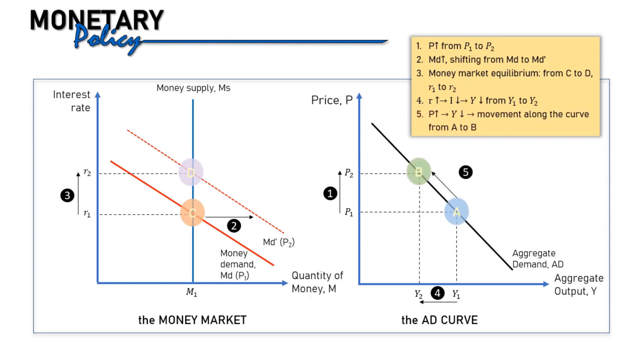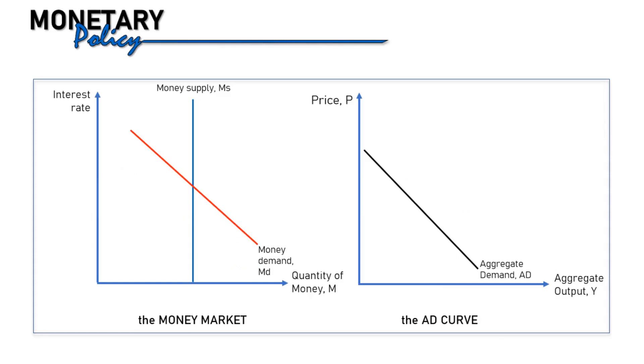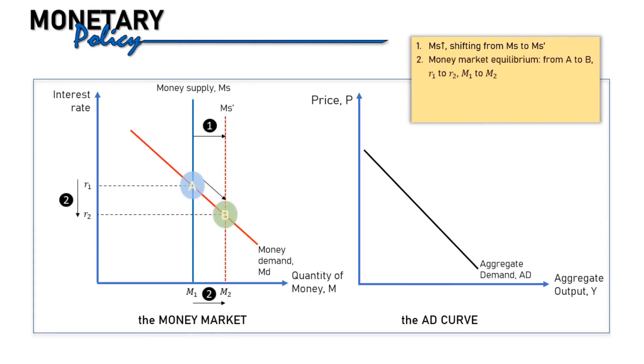We can observe in the aggregate demand diagram that price increase results in lower Y, or movement along the aggregate demand curve from point A to point B. Now, how if monetary policy is adopted? Monetary policy increases money supply. Higher money supply shifts the MS curve to the right, from MS to MS prime. Now we have excess money supply that leads to the new equilibrium at B, at lower equilibrium interest rate and higher quantity of money. The change in interest rate is reflected in aggregate demand curve. Lower interest rate will increase AD because investment is now higher. At the same price P bar, Y increases from Y1 to Y2. Since the source of change is not from price, aggregate output is higher at any given price. It means AD curve shifts to the right.